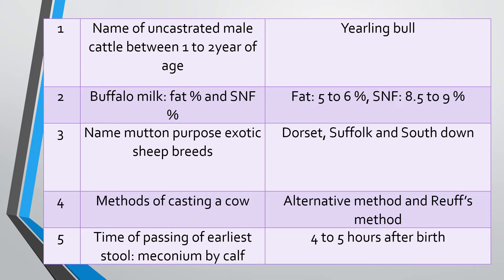Question four: Methods of casting a cow. A cow can be cast by several methods, including local methods. The technically approved methods are: the Reeves method and the alternative method. By using these casting methods, the cow remains safe and without injury.